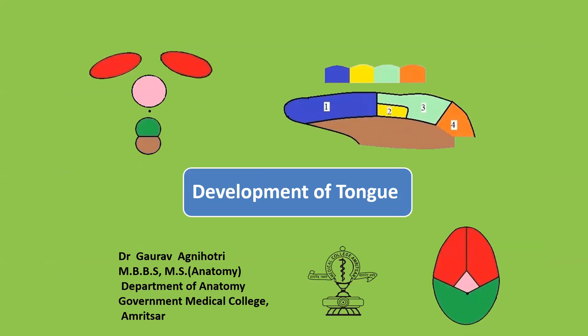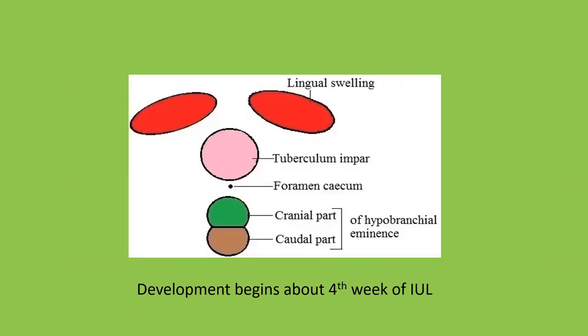The development of the tongue begins by about the fourth week of intrauterine life. The medial most part of the mandibular arches proliferate to form the lingual swellings, shown in red color here. Just behind the lingual swellings, another swelling appears which separates them, called the tuberculum impar, shown in pink color. Just behind the tuberculum impar is the location of the foramen cecum.